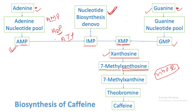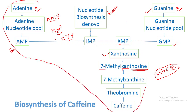Now let's go through this whole process with chemical structures, starting from adenine and going towards caffeine. I will focus on the adenine pathway; the guanine pathway is quite similar.